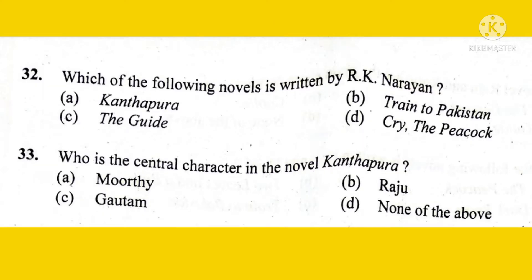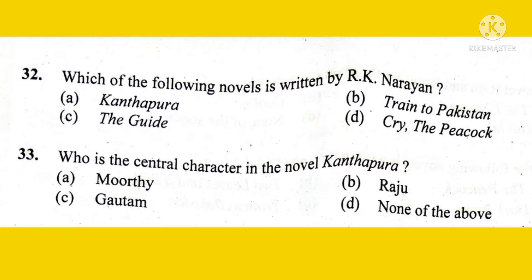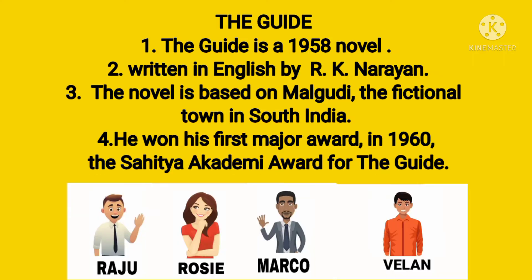Which of the following novels is written by R.K. Narayan? The right option is The Guide. Next question: Who is the central character in the novel Kanthapura? The right answer is Option A, Murthy. The Guide is a 1958 novel written in English by R.K. Narayan. The novel is based in Malgudi, the fictional town in South India. He won the Sahitya Academy Award for The Guide in 1960. The main characters in this novel are Raju, Rosie, Marco, and Velen.